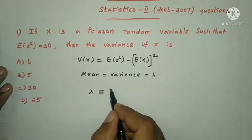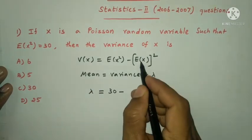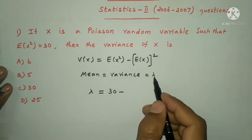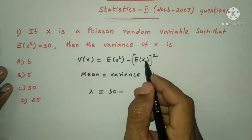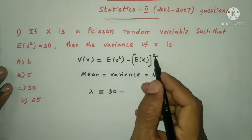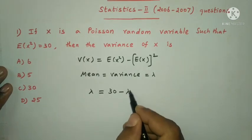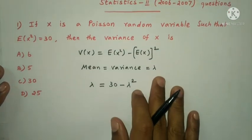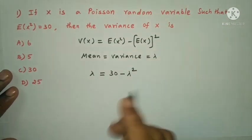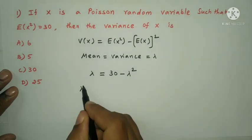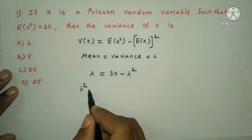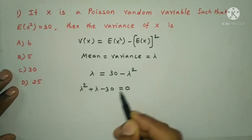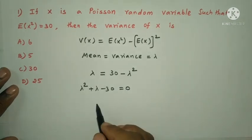E(X) is mean, and mean equals lambda. So this becomes lambda equals E(X²) minus lambda squared. Rearranging: lambda squared plus lambda minus 30 equals 0.